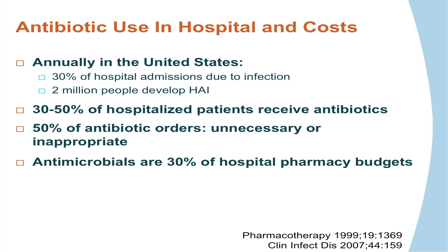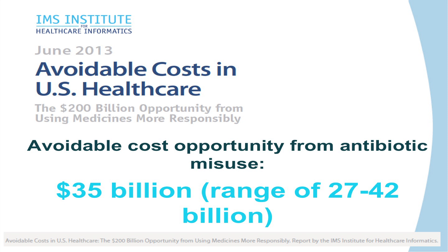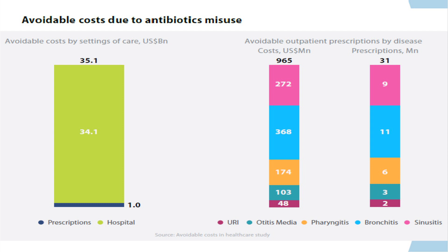Antimicrobials are expensive. The main goal of stewardship is to have a good outcome for the patient — the goal isn't to stop patients from being on antibiotics, but to give antibiotics correctly. The estimated avoidable costs from antibiotic misuse are around $35 billion. The yellow on the chart represents hospital costs and the blue represents out-of-hospital prescription costs, with the majority coming from the hospital setting.